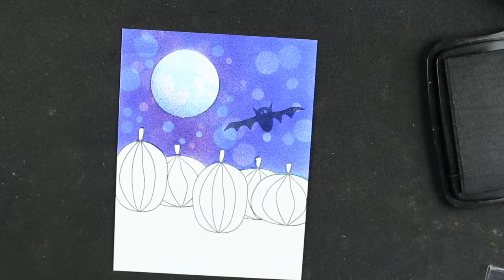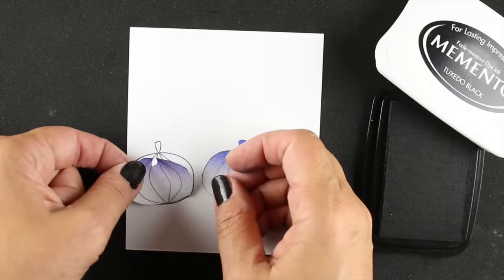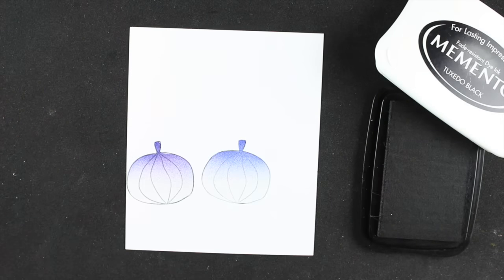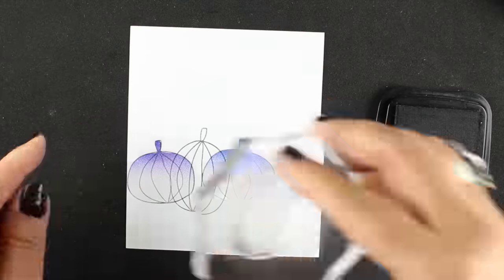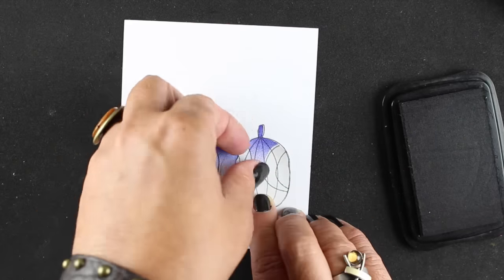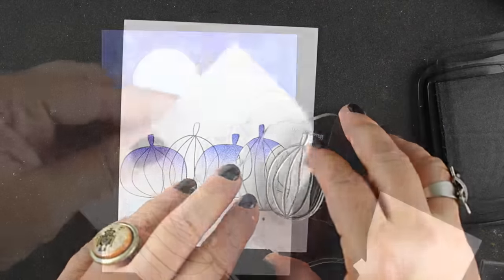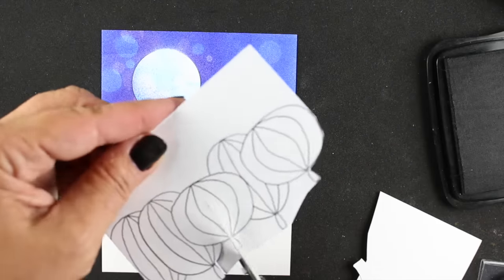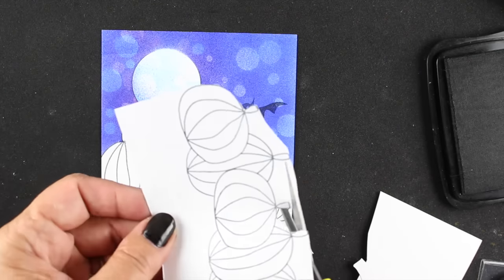There's a little bat in the stamp set, so I decided to stamp him off in the sky flying away. Then I started to create the secondary piece that's going to add the other layer of the pumpkins to the pumpkin patch. I'm using the same masks that I pulled off of the other piece and I'll fussy cut them out, both the top and the bottom.